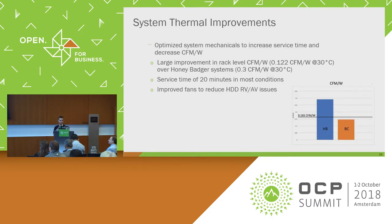For system thermal improvements compared to our previous chassis, we went from about 0.3 CFM per watt at 30 degrees Celsius down to 0.122 CFM per watt at the rack level — a huge decrease in CFM requirements to cool the system as a whole. This allows us to deploy more racks and need less cooling in the data center.